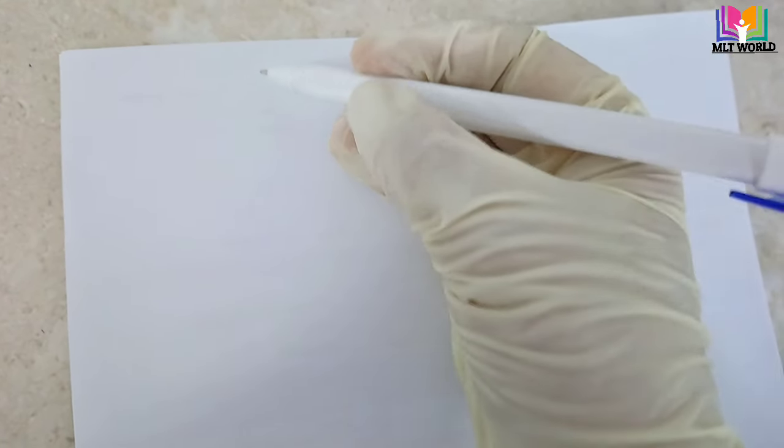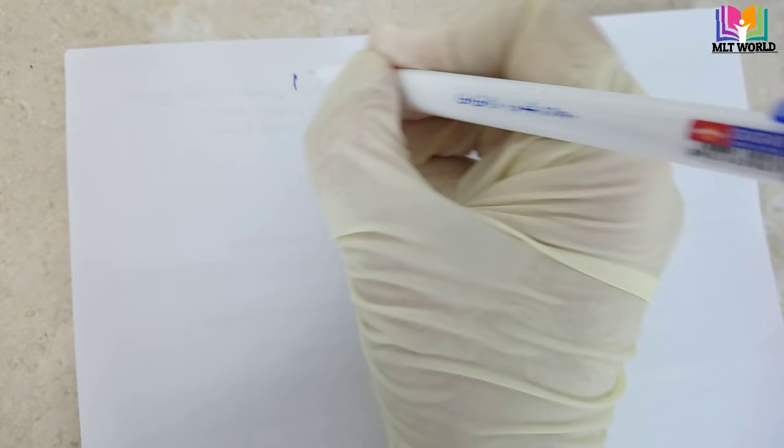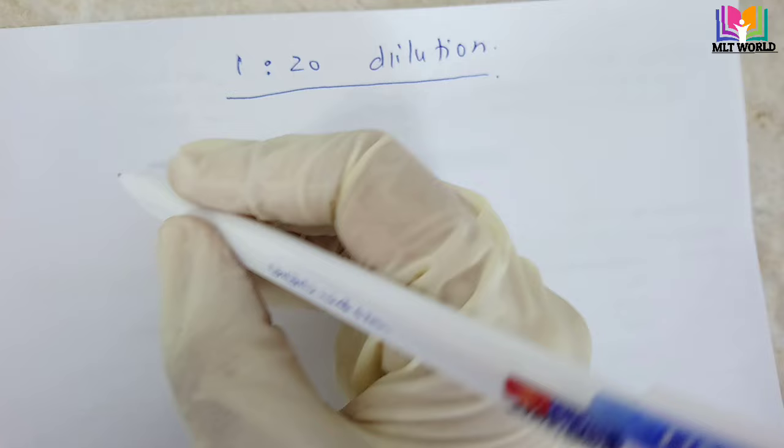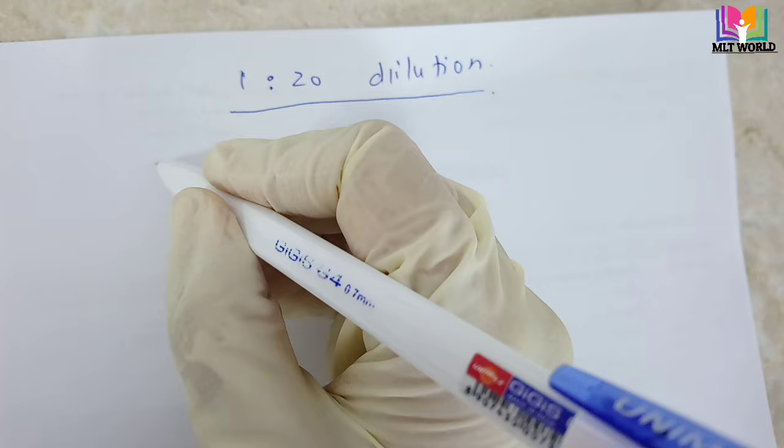Welcome back. Today in this video I will show you how we will make 1 is to 20 dilution. As you know, this dilution we will use in hematology for manual WBC count, and mostly when the sample is very less quantity, either in biochemistry or in hormones — that time we need this dilution.